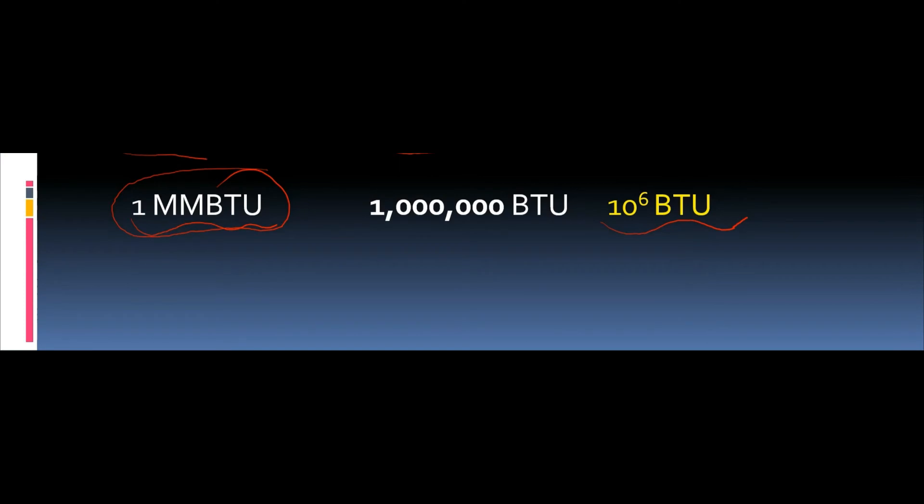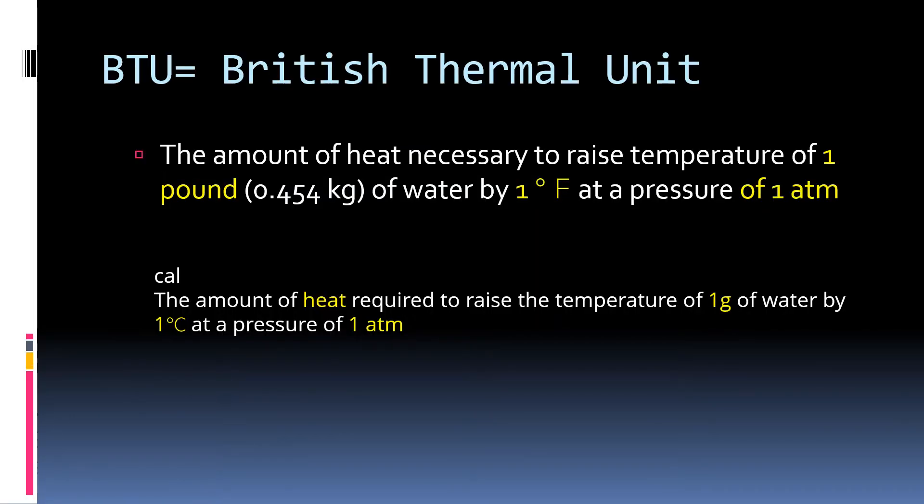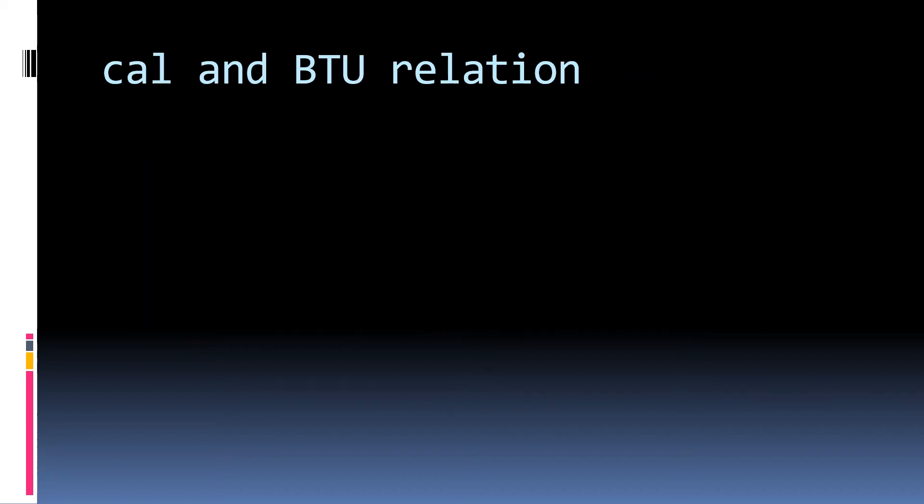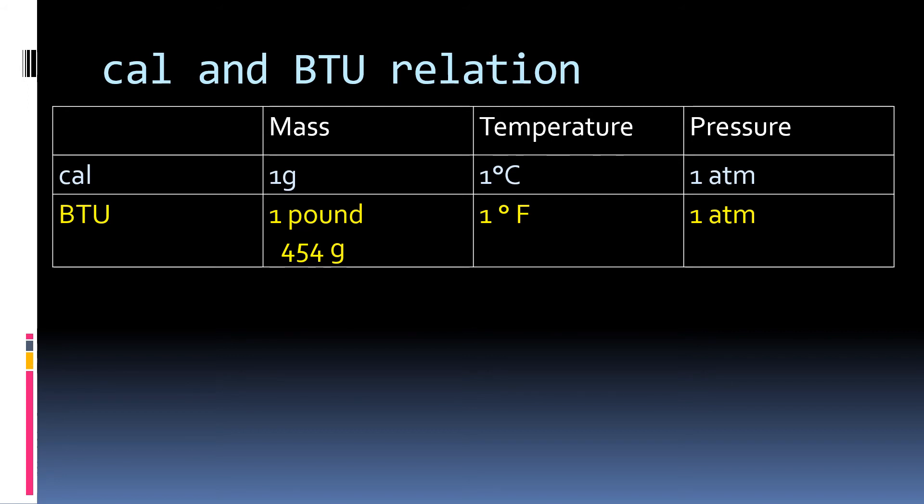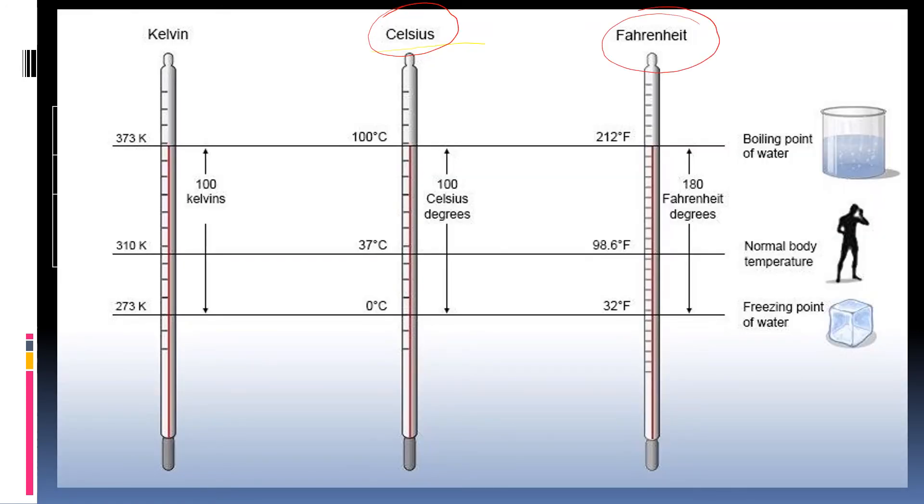We will be concentrating on million metric BTU which is a unit of energy. 1 million metric BTU is equal to 10 to the power 6 BTU. But what is BTU? BTU is British Thermal Unit. It is the amount of heat necessary to raise the temperature of 1 pound of water by 1 degree Fahrenheit at a pressure of 1 atmosphere. Compare this with the definition of calorie. You will see the differences. 1 gram is replaced by 1 pound. 1 degree Celsius is replaced by 1 degree Fahrenheit.